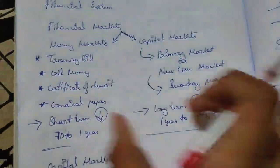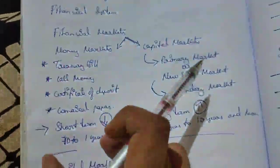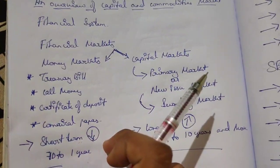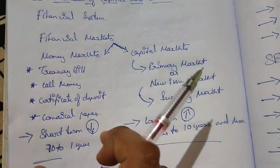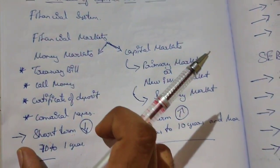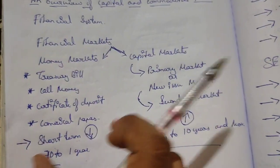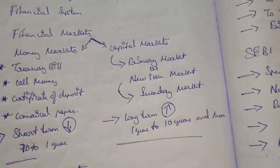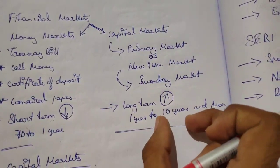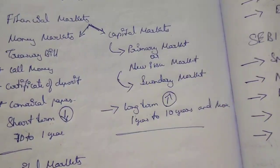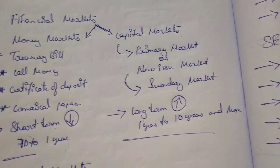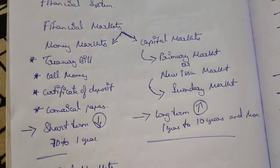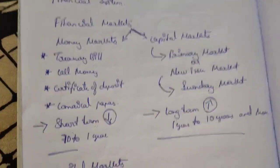Money market is done for working capital requirements — to meet day-to-day business activities. Capital market is done to purchase big machinery and all, because with ten years, they can pay after ten years. In the money market, within one year, they have to pay within that stipulated period of time only.